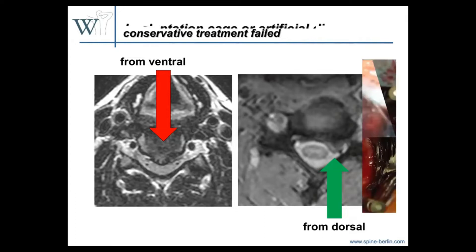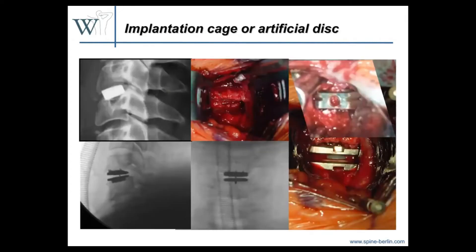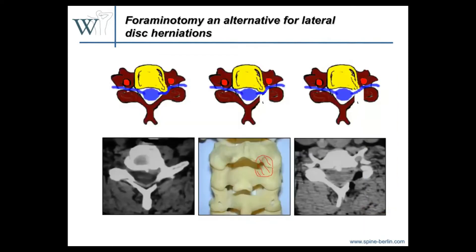Should you go from dorsal? The problem when you go from ventral is that you need to pass the disc to the posterior part where the disc herniation is. In lumbar disc surgery you will never do this — you will always go from dorsal because it's not so difficult to medialize the nerve root and reach the disc herniation. In the cervical spine it is more difficult because you have the spinal cord which cannot be displaced. When you go from ventral, you need to remove the disc first, then reach and remove the disc herniation, and then you will have a hole — and the question is what to do with it. Usually you will place a cage or an artificial disc, so you will have an implant.